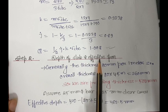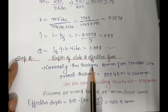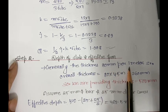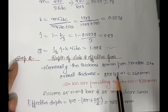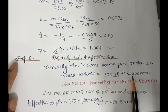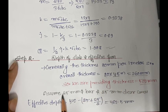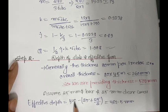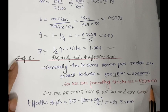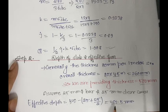In the second step, we find the depth of the slab. Generally, the thickness taken in the slab is 80 mm per meter of span. Overall thickness equal to 80 into 4.5 meter, giving 360 mm. We are providing overall thickness equal to 500 mm. Assuming 25 mm diameter bar and 25 mm clear cover, effective depth equals 500 minus 25 plus 25 divided by 2, giving effective depth d equal to 462.5 mm.